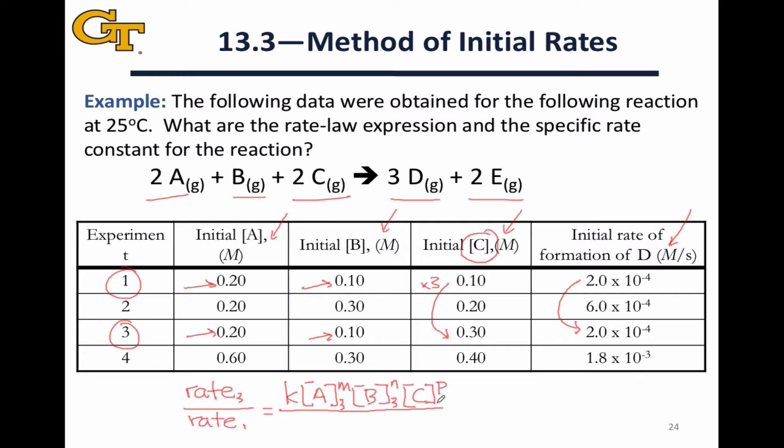And this is all for trial three, so these concentrations are going to be a little bit different, divided by the corresponding expression for trial 1, the concentration of A in trial 1, the concentration of B in trial 1, and the concentration of C in trial 1, with C raised to the P power, B raised to the N power, and A raised to the M power.